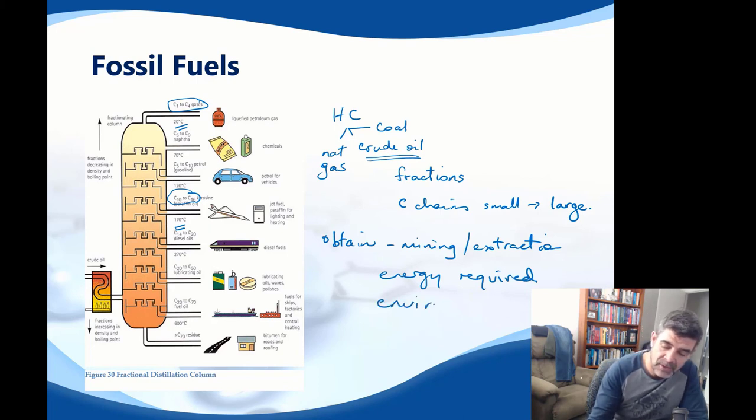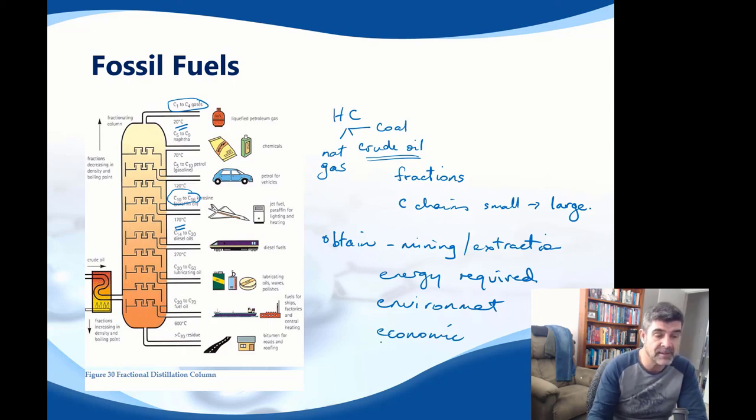There are also environmental costs, or at least potential environmental costs, associated with mining and obtaining hydrocarbons from the earth. And then there are also economic factors and sociocultural factors. All of these are important when we are looking at the use of different types of hydrocarbons that we obtain from the earth.